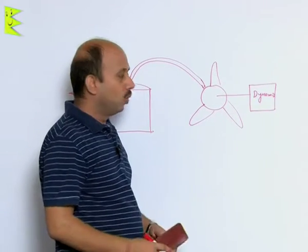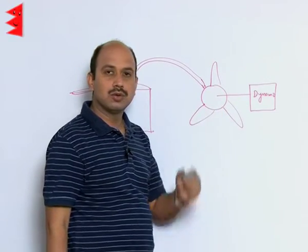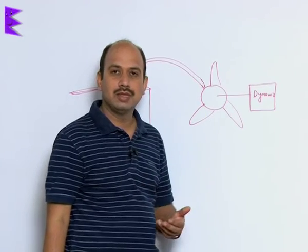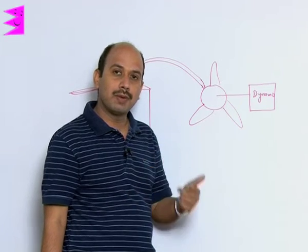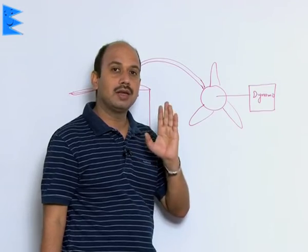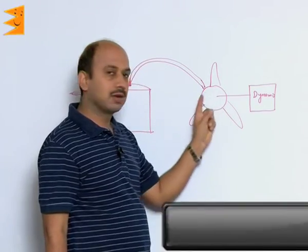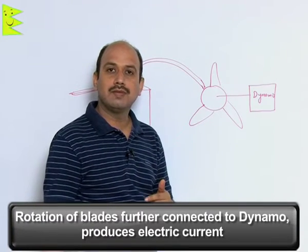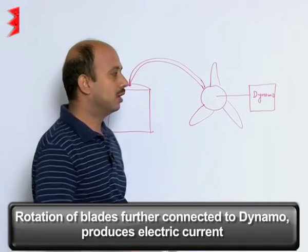When this turbine rotates, the dynamo is connected to this. Inside the dynamo there is a coil and magnet. As the coil rotates between the poles of magnet, electric current is generated through electromagnetic induction. By rotating this turbine, by rotating the coil between the poles of the magnet inside the dynamo, we can get electric current.